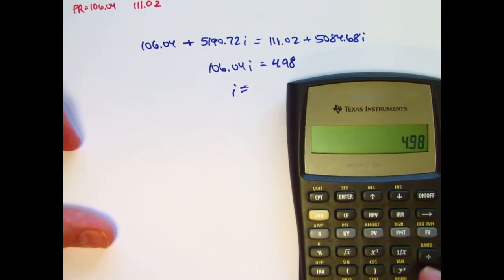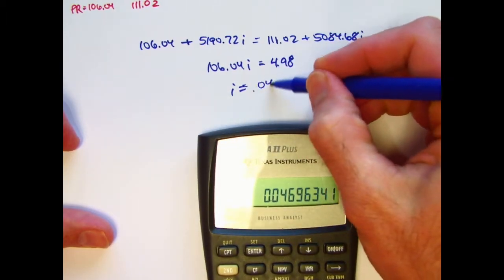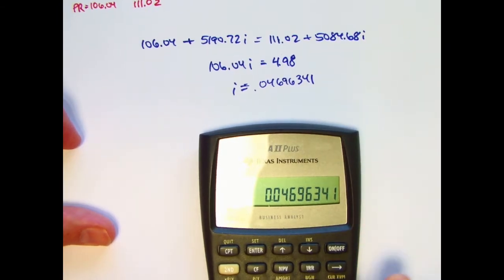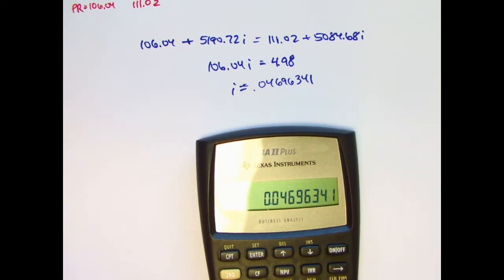4.98 divided by 106.04. The interest rate, six-month interest rate, is 0.04696341. Take that and plug it into either one of these expressions and you'll get the answer to the problem.